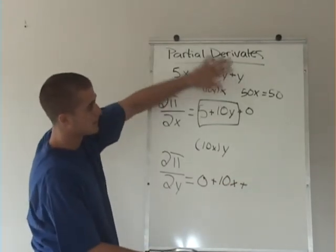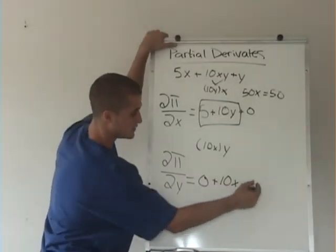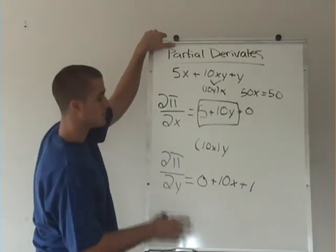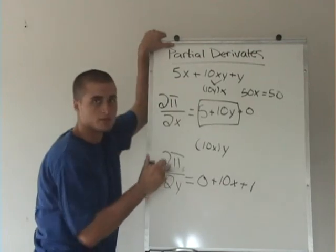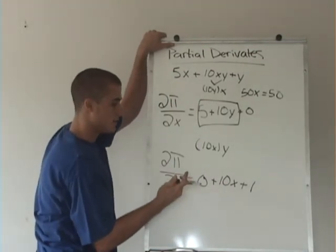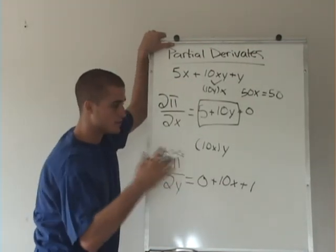Plus the y, the derivative of y is 1. So there we treated y like it was the variable, and x like it was a number. And other than that, it's just a normal derivative.